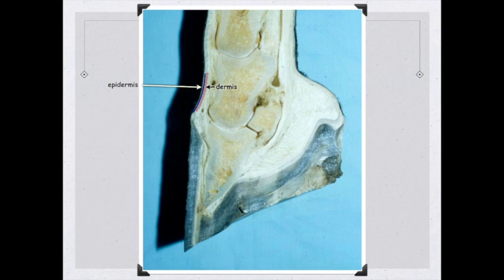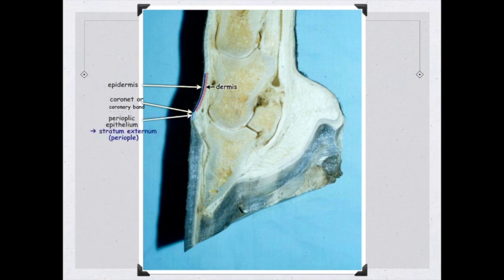The junction of the skin and the hoof wall is known as the cornet, sometimes referred to as the coronary band. The initial epithelium of the hoof is the perioplic epithelium, and it gives rise to the stratum externum or perioplic, which is a very thin layer over the surface. It has an underlying connective tissue known as the perioplic corium.